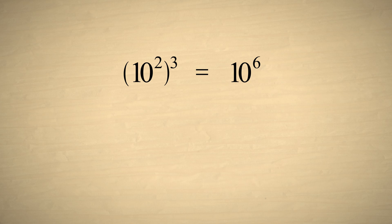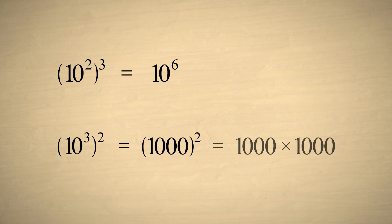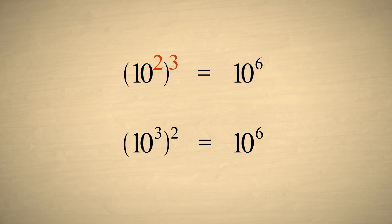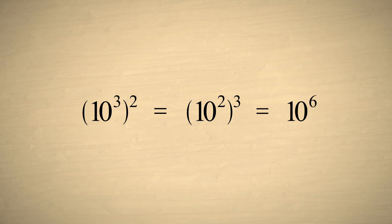Likewise, if we take ten cubed and square it, this is the same as one thousand squared, and one thousand times one thousand is one million, or ten to the sixth power. So squaring ten cubed and cubing ten squared both give the same result: ten to the sixth power. This makes sense because when we multiply the exponents three and two, or two and three, either way we get six.